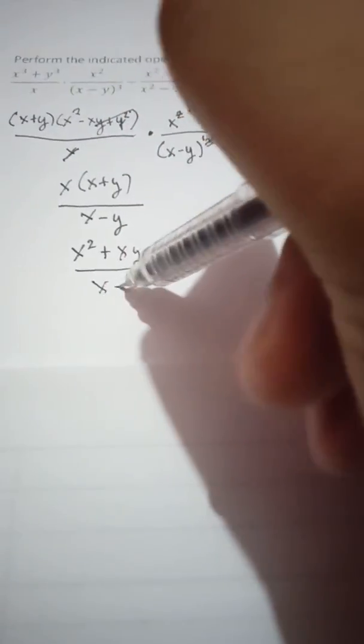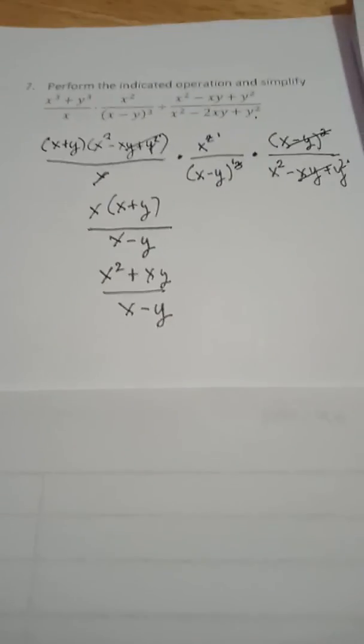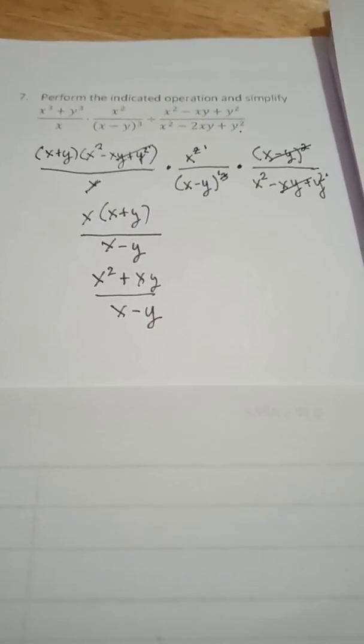So we have x times x plus y over x minus y. Or, you can multiply this. So this will become x squared plus xy over x minus y. That would be our answer for number 7.